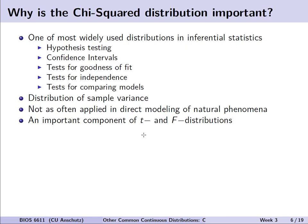Why is the chi-squared distribution important or useful? It turns out it's one of the most widely used distributions in inferential statistics — to calculate confidence intervals and p-values for hypothesis testing, for goodness of fit tests, tests of independence, or to compare models. It is also the distribution of the sample variance, and it forms an important component of both the t and the f distributions discussed later in this lecture.